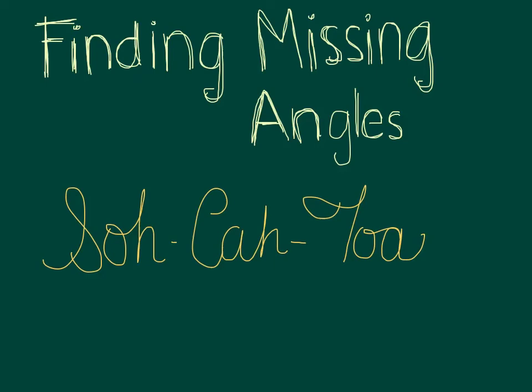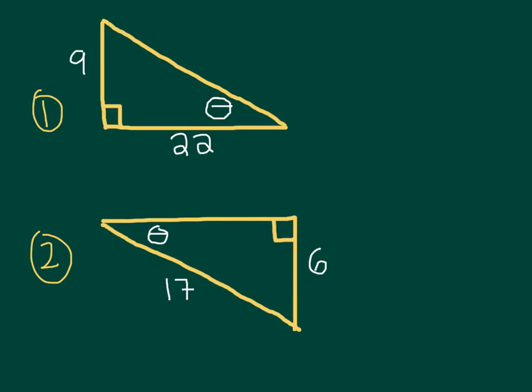Now we'll look at two examples of finding the missing angles using SOHCAHTOA. In both of these examples you can see that we're looking for angles because one angle is labeled with this funny looking zero with a line through it. This is called a theta.